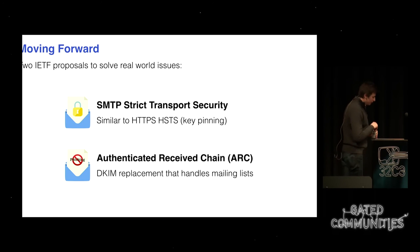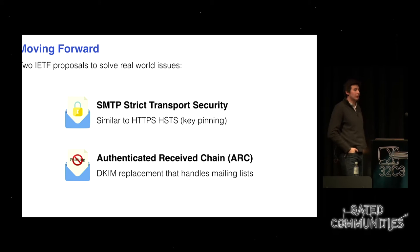Wie machen wir jetzt weiter? Wir sind im Moment in einem schlimmen Ort. Wir wollen wissen, dass wir mit dem richtigen Mail-Server reden, wir wollen TLS immer verwenden, und wir wollen wissen, dass die Mails tatsächlich von da her kommen, wo sie sagen, dass sie her kommen. Es gibt zwei Vorschläge in der IETF: Das eine ist SMTP Strict Transport Security – ähnlich wie HSTS für HTTPS. Eine Domain kann sagen: alle Nachrichten die du zu mir schickst, müssen verschlüsselt sein.